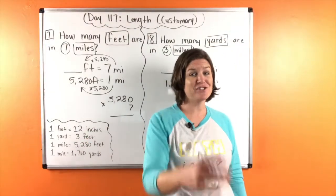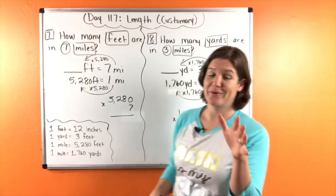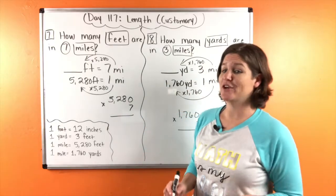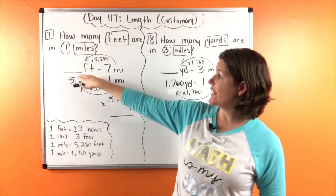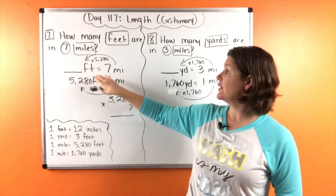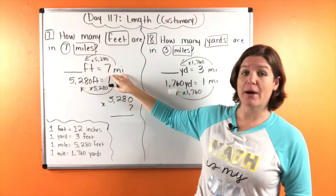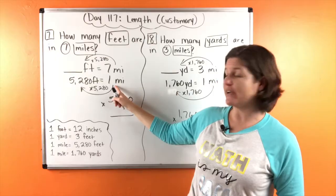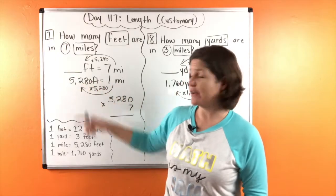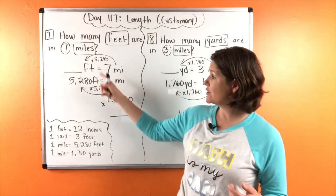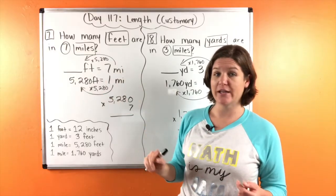All right, last two. We're almost there for today. Okay, we've got number seven and number eight to go over. So number seven said, how many feet are in seven miles? And we know that one mile contains 5,280 feet. You got to make sure you match up your unit. So check to make sure you did that.